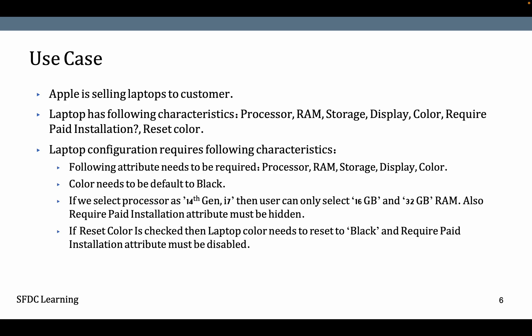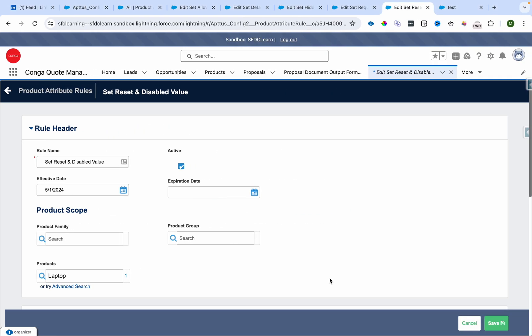The laptop configuration requires the following: the attributes processor, RAM, storage, display, and color need to be required. Color needs to be defaulted to black. If I select processor as 14th gen i7, I should only be able to select 16 GB and 32 GB RAM, and the required paid installation attribute must be hidden. If I check the reset color checkbox, then the color needs to be reset to black and the required paid installation attribute must be disabled.